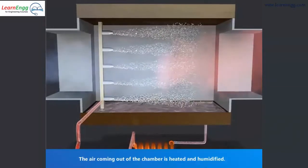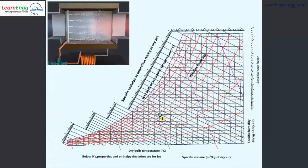The air coming out of the chamber is heated and humidified. As shown in the psychometric chart, the incoming air is at temperature TD1 and specific humidity W1.